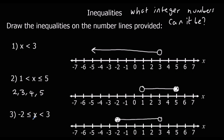So what integer numbers can it be for number 3? It can be minus 2, minus 1, 0, 1, and 2. It can't be 3 because it's not 'or equal' — it's not coloured in.